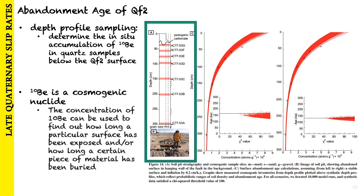To calculate the abandonment age of QF2, they sampled along a depth profile to determine the in-situ accumulation of beryllium-10 in quartz samples below the QF2 surface. Beryllium-10 is a cosmogenic nuclide, so its concentration can be used to find out how long a particular surface has been exposed and/or how long a piece of material has been buried.